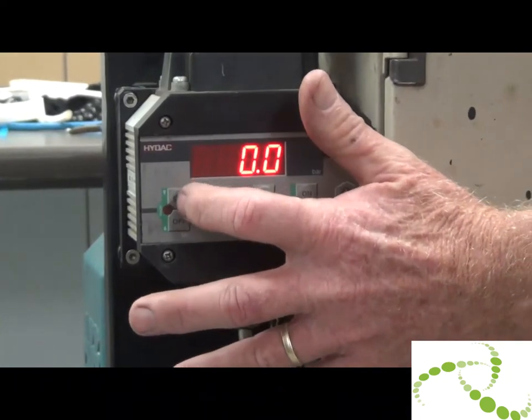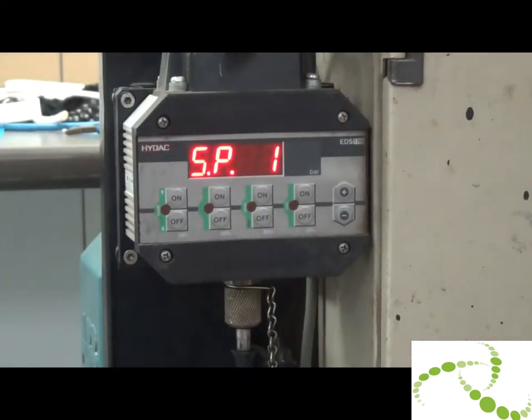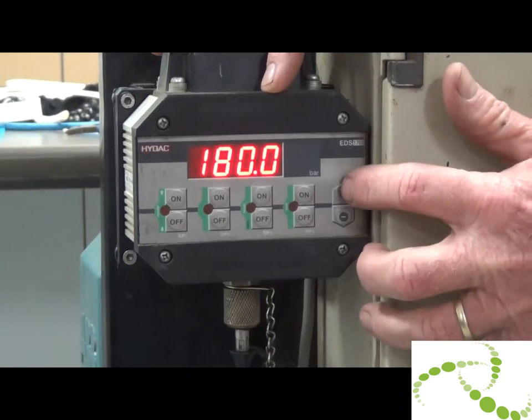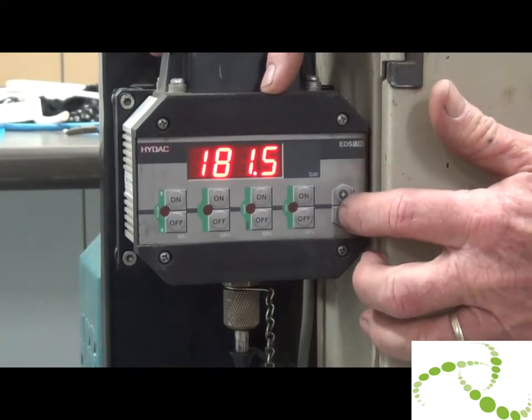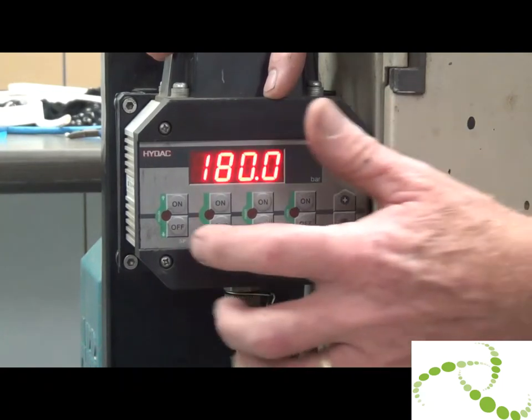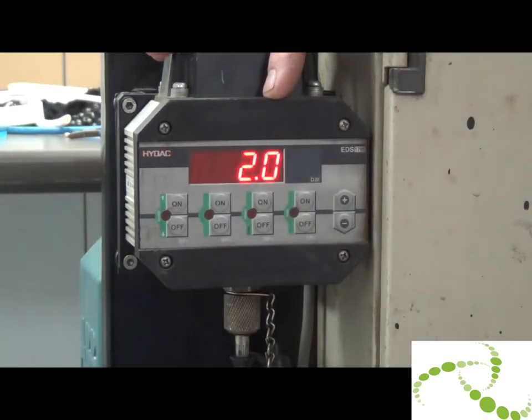What we do is press the ON button for the first one. This is rivet setter number one, that is set to 180 bar. The plus or up arrow increases the pressure, down arrow decreases the pressure. Press the OFF key and that will set it.